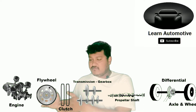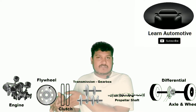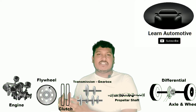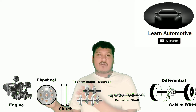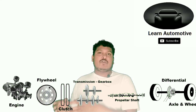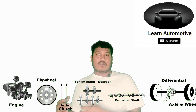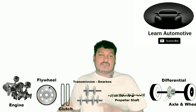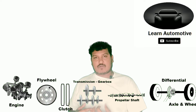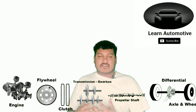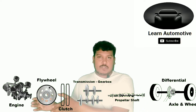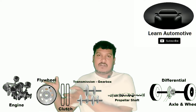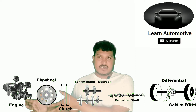After the flywheel, we have the clutch. The clutch will be pressed with the flywheel, and the main role of the clutch is to engage and disengage the engine and transmission. Whenever you are changing the gear or cranking the engine, the engine should not engage with the transmission. The clutch is a bridge between the transmission and the flywheel.